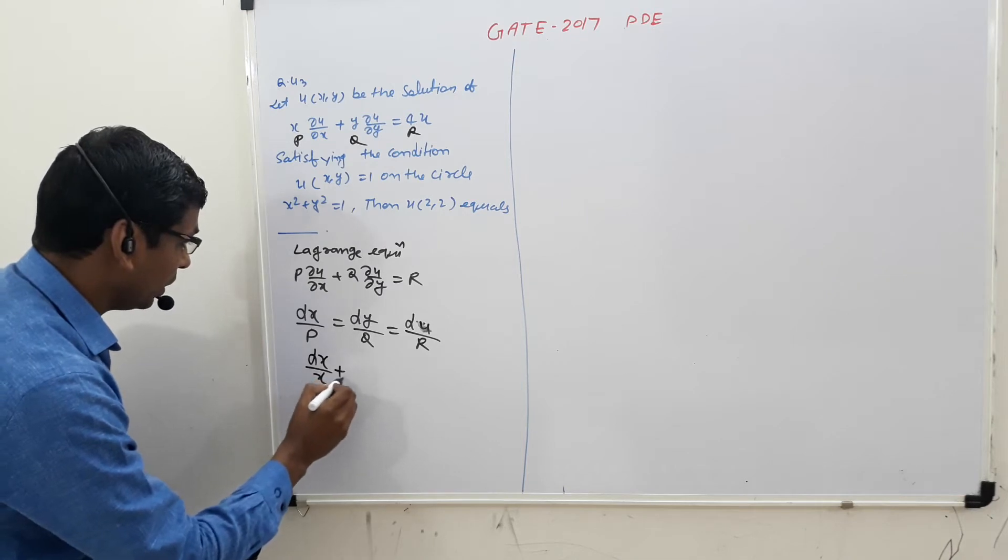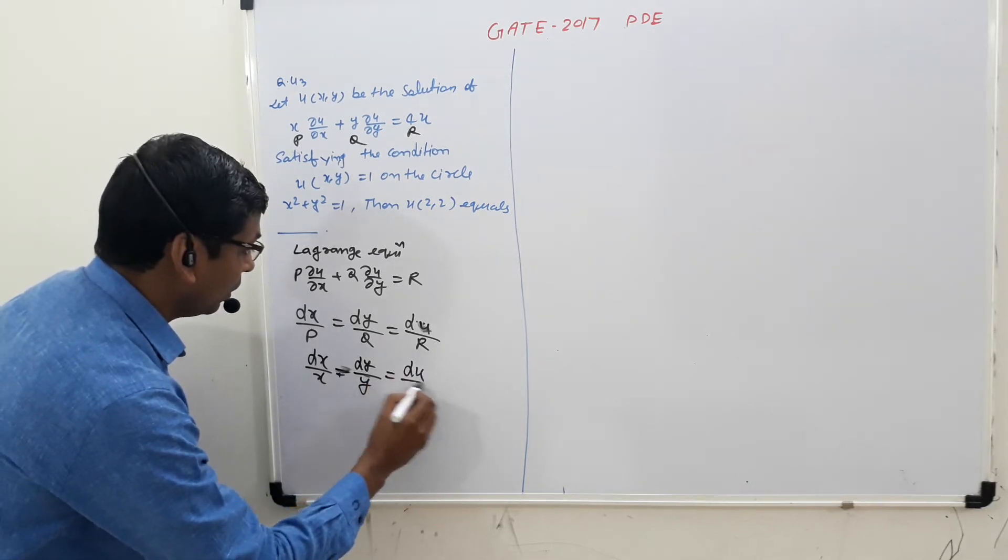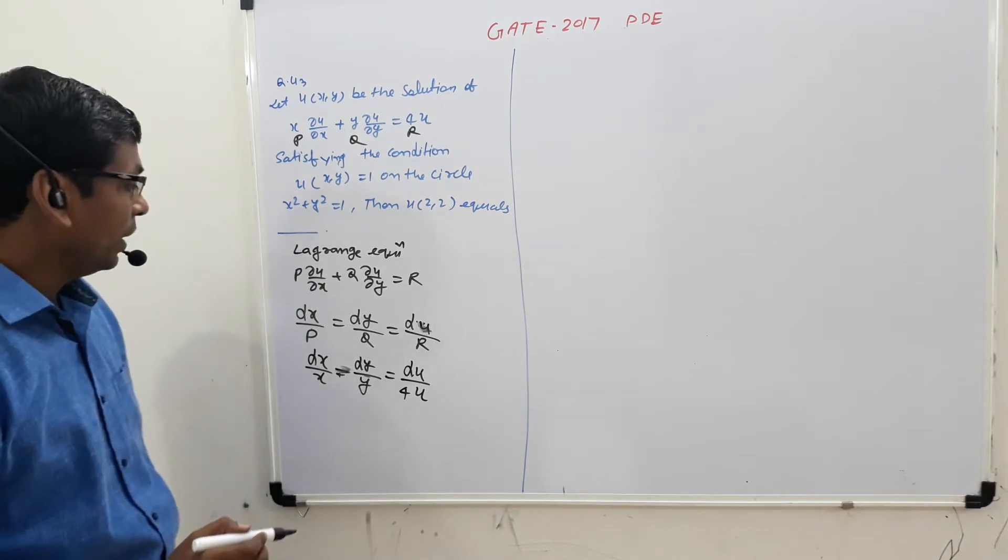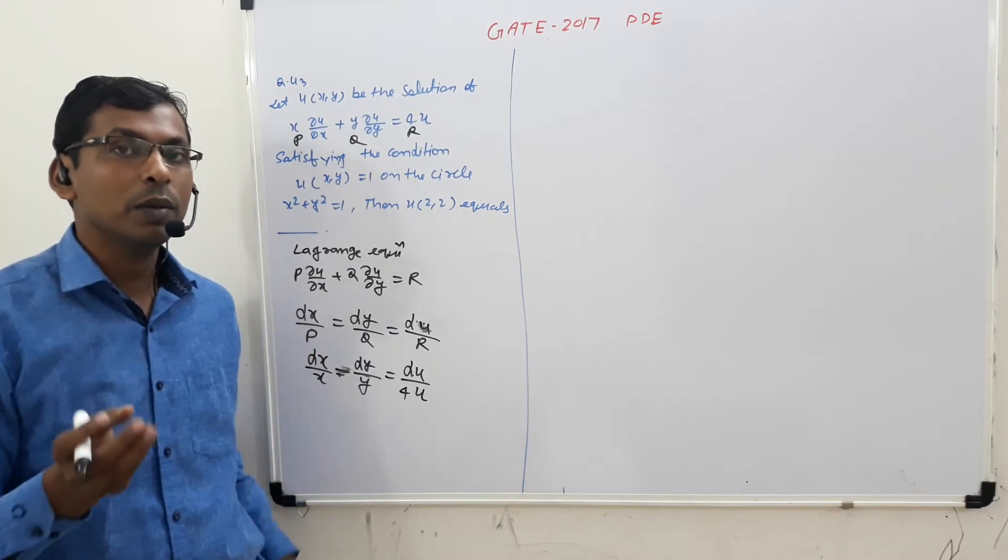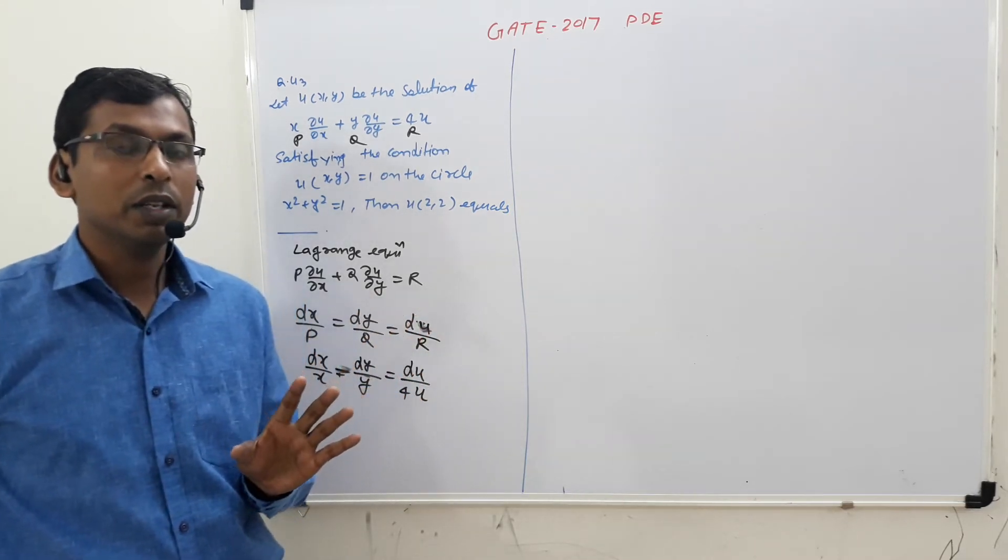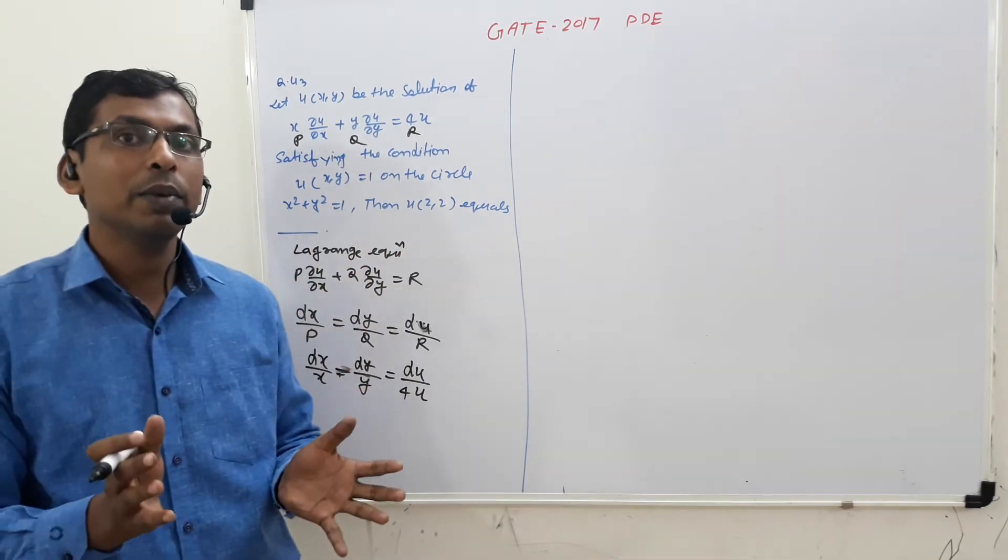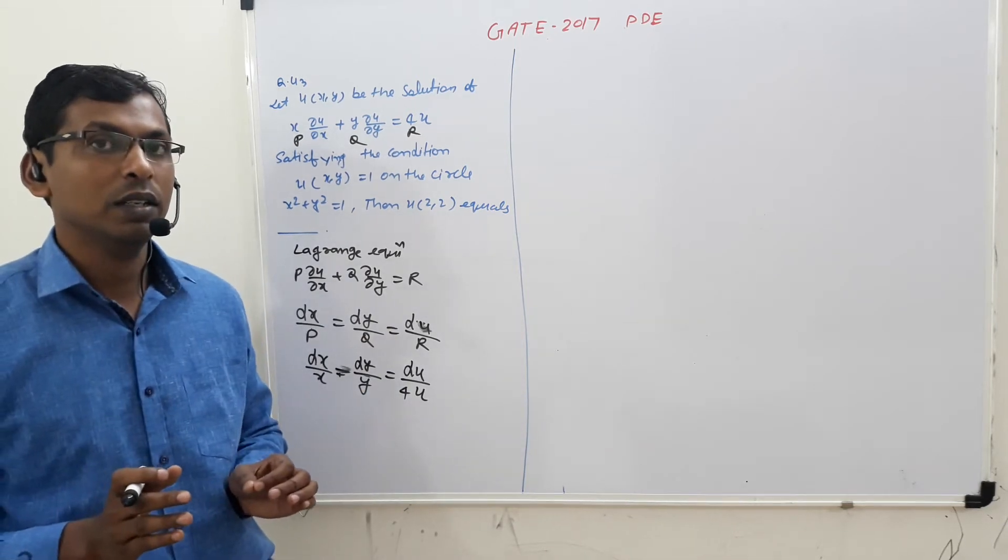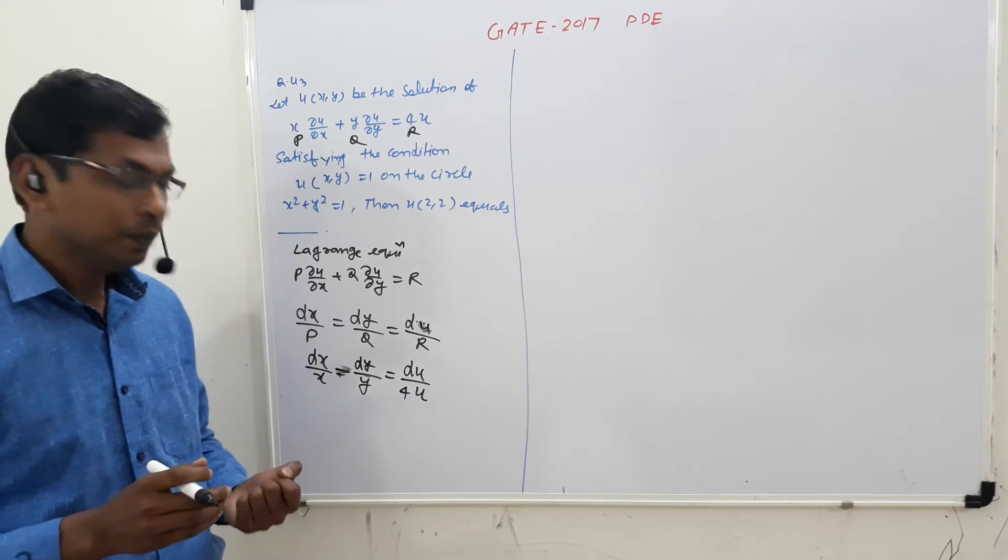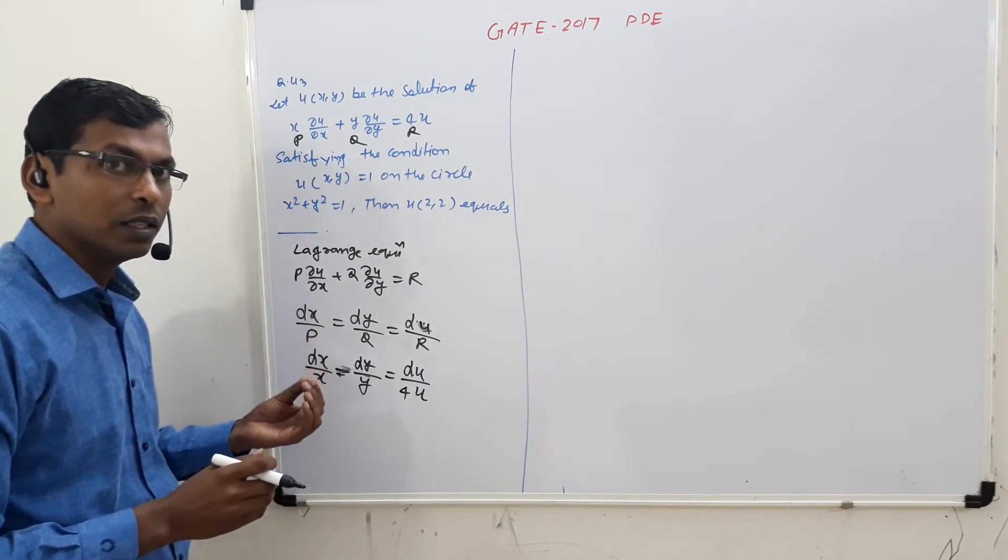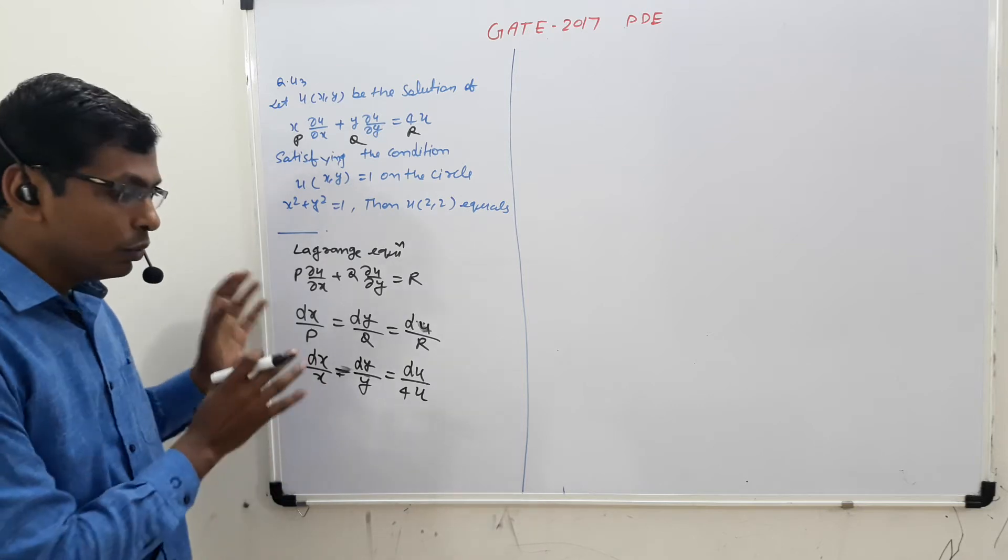Lagrangian equations: dx/x = dy/y = du/4u. You have given the boundary conditions, so what do we do now? How do we create a relationship that u(x,y) is a three variable relationship which is the differential solution? We use the properties of Lagrangian equations.